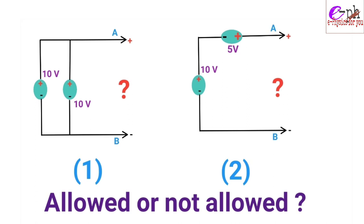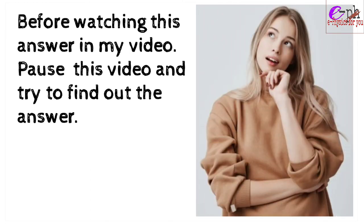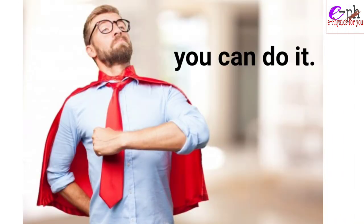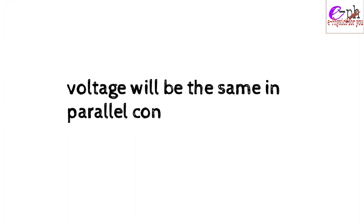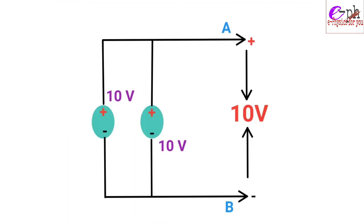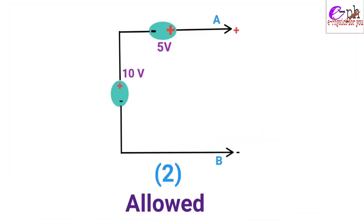Which one of these two circuits is allowed or not allowed? Pause this video and try to find the answer yourself. The first circuit will not be allowed because two 10-volt batteries are connected in parallel. In a parallel connection, voltage is the same, so it will provide only 10 volts across the AB terminals — this circuit is not beneficial to us.